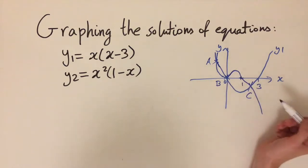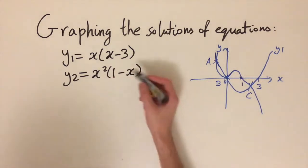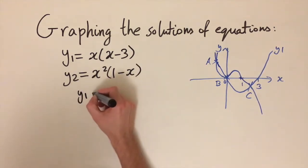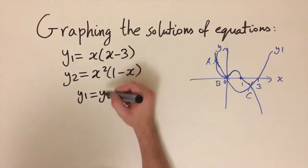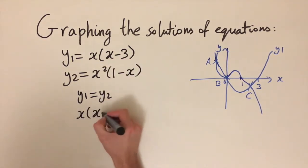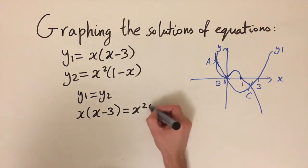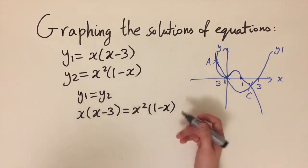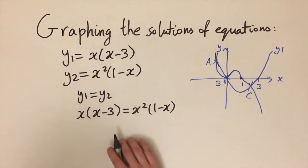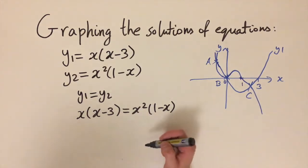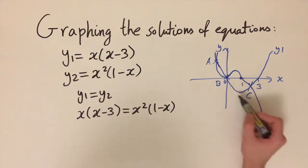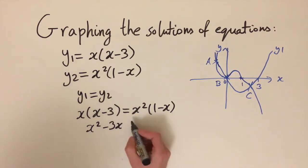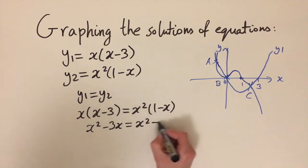To find where these two curves intersect, we set y1 equal to y2. In terms of x's, that gives us x times (x minus 3) equals x squared times (1 minus x). We want to rearrange, simplify, and solve for x. Expanding the brackets: we get x squared minus 3x on the left and x squared minus x cubed on the right.